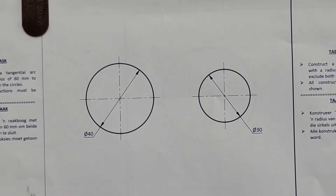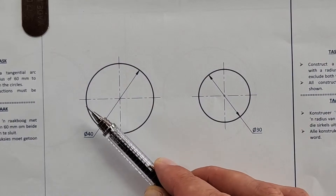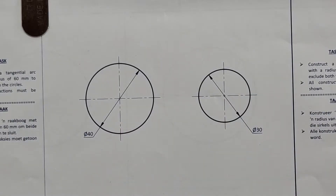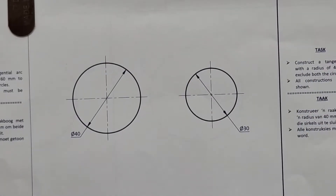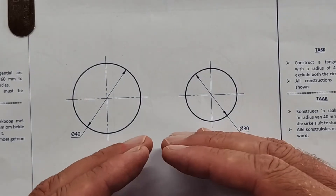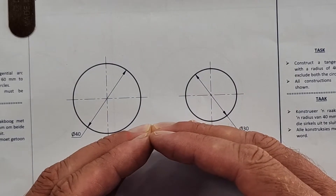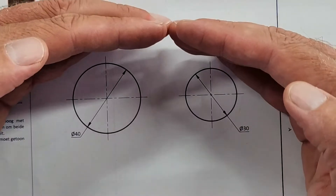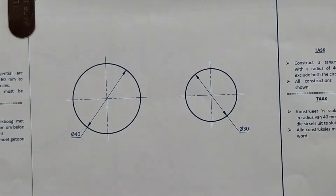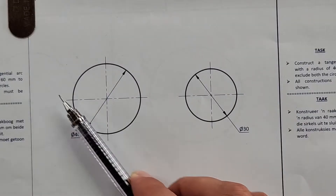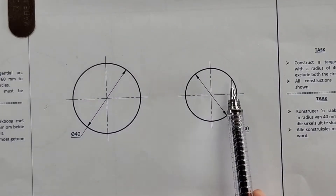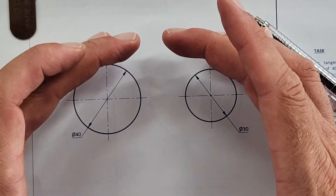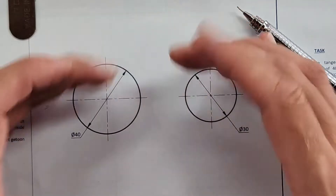We need to construct a tangential arc with a radius of 60 millimeters to include both circles. If the arc excluded both, it would follow a different path on the outside. But this arc needs to include both - so if I closed that circle, these two circles would be on the inside. That's what 'inclusive' means.